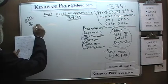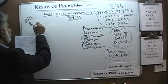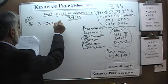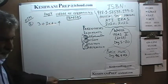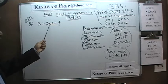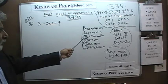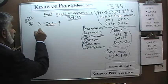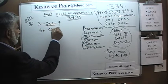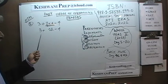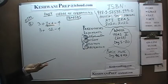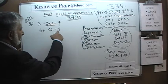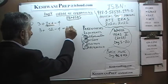Number 2. It says 3 plus 2 times 6 minus 4. What do we do first? We have addition, subtraction, and multiplication. We do multiplication first, obviously. So we get 3 plus 12 minus 4. After that, we just have addition and subtraction — it doesn't matter which one we do first; we can go in any order. 3 plus 12 is 15, and 15 minus 4 is 11. Voila.